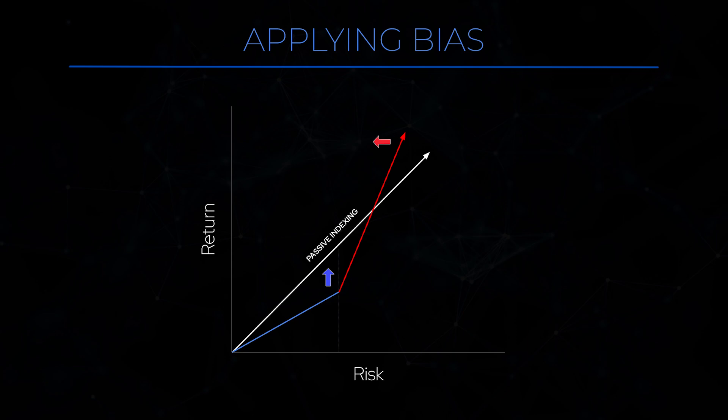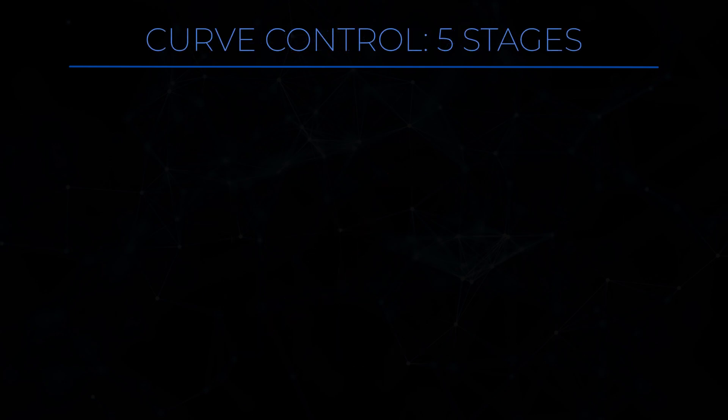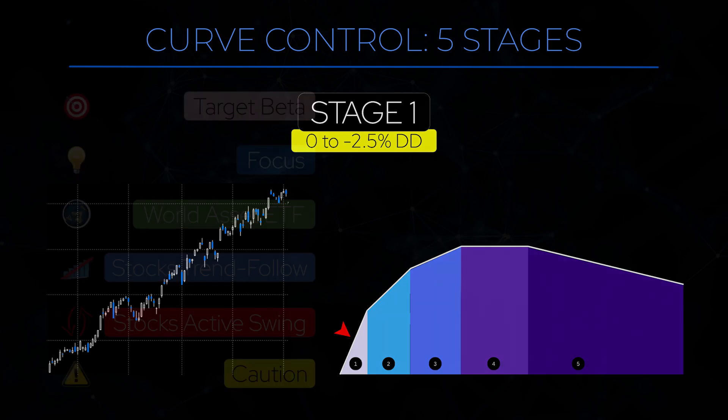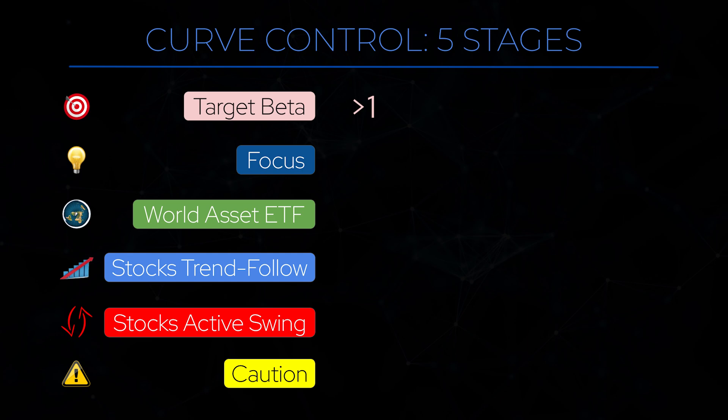Beta curve management is simply the dialing in and out of that risk management bias depending on market conditions. The goal is to get your portfolio to be as loose as possible during easy bull market phases, and as tight and restrictive as possible during chaotic bear market phases. We can identify five distinct stages of beta curve management, assuming no leverage for simplicity. Stage 1 is when the market keeps making new highs, meaning the drawdown is between 0 and no more than 2.5%. In this phase, your beta is expected to be as close to 1 or even slightly higher, and all efforts are made to capture as much market upside as possible, with little to zero cash left to spare.